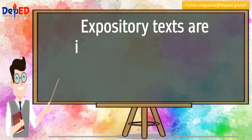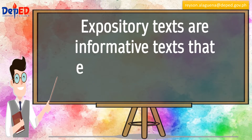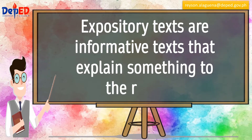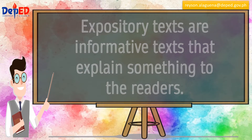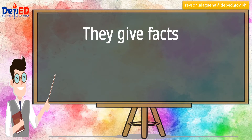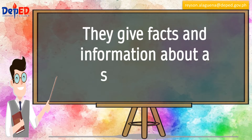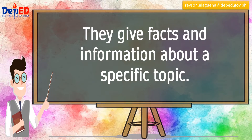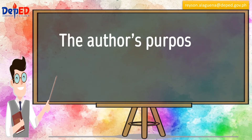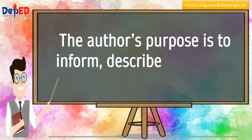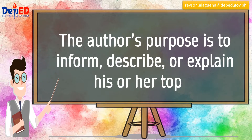Expository texts are informative texts that explain something to the readers. They give facts and information about a specific topic. The author's purpose is to inform, describe, or explain his or her topic.